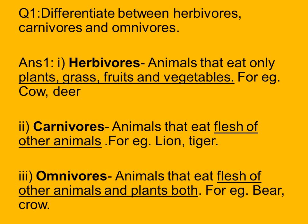After reading the chapter and doing the keywords and short question answers, you all might be very fluent with these three terms. Herbivores are animals that eat only plants, grass, fruits and vegetables. Examples include cow, deer, horse, and buffalo.